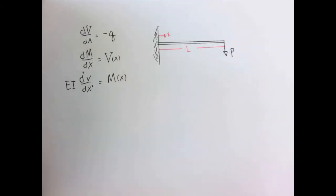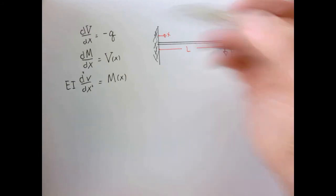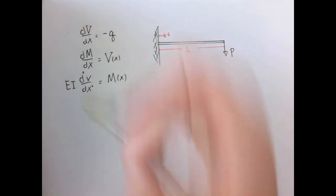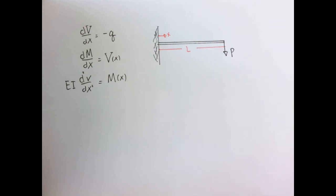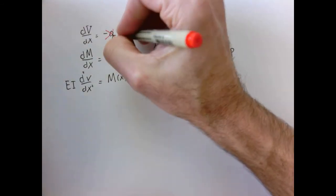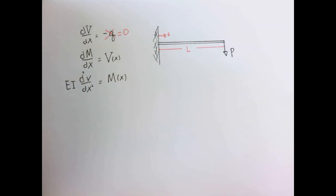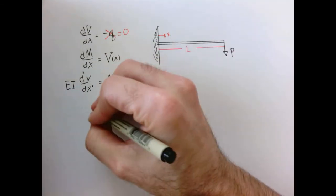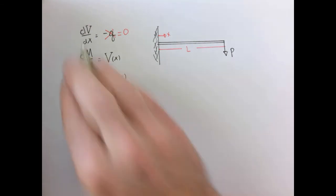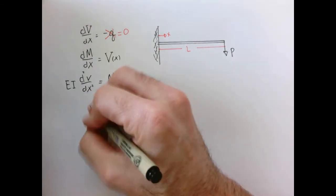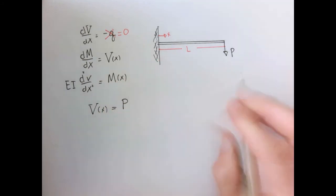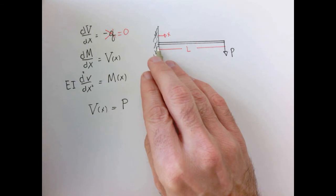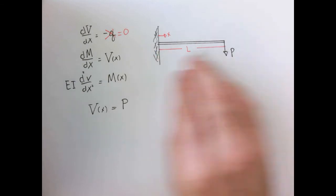For one more example of a cantilever beam, let's look at the shear, bending moment, and deflection equations for a cantilever beam of length L with a point load P applied at the end. In this case, the shear is quite simple because there is no distributed load, so dV/dx equals zero. This means the shear as a function of x is a constant, and that constant is simply P — the value of the reaction and the internal shear anywhere along the beam.